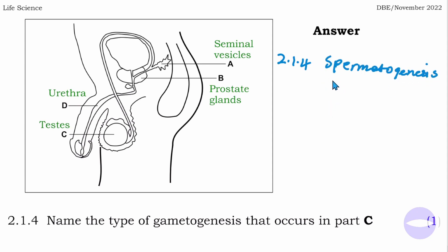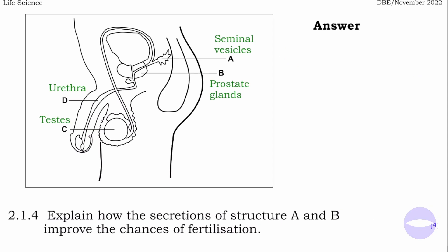The next question says: name the type of gametogenesis that occurs in part C. Part C is the testes. The gametogenesis that takes place in the testes is called spermatogenesis — the production of sperm cells. The answer to 2.1.4 is spermatogenesis, while in the female ovary it is called oogenesis.